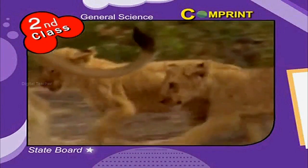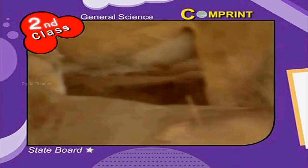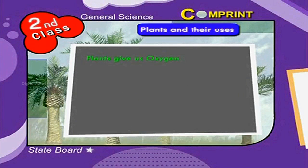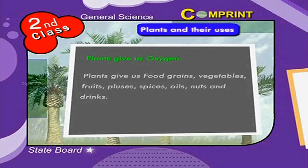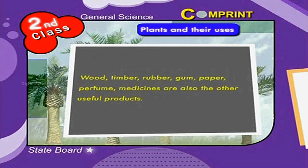Some big trees provide shade to animals. Now let us summarize the points. Plants give us oxygen. Plants give us food grains, vegetables, fruits, pulses, spices, oils, nuts and drinks. Wood, timber, rubber, gum, paper, perfume and medicines are also other useful products from plants.